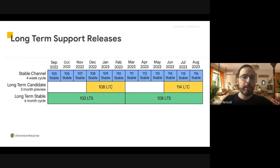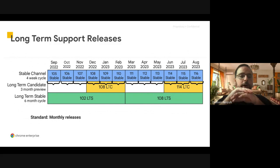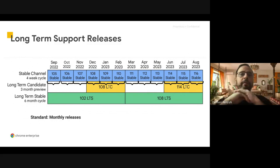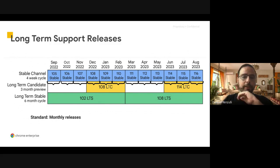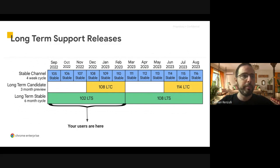If you look at the diagram, the first row belongs to the stable channel four-week cycle. If you do your homework properly, you would be testing every month, anticipating the new stable release by testing on the dev and beta channels. But if you turn on these long-term support channels, you get a longer six-month period where there's only one version. During this time, users won't receive new features or major changes, but they will receive security fixes to make sure everything works well.